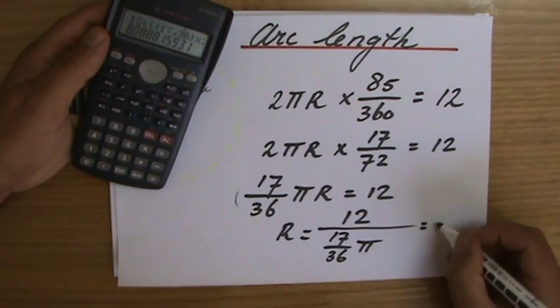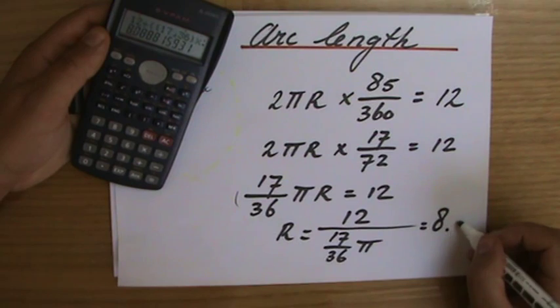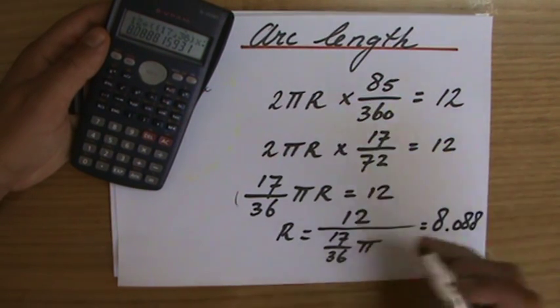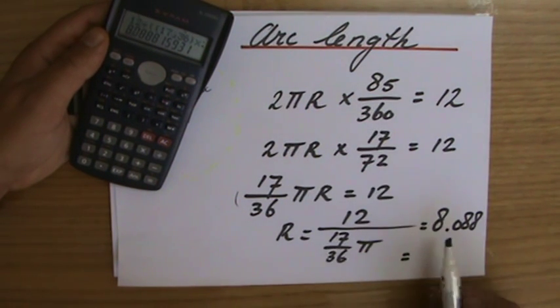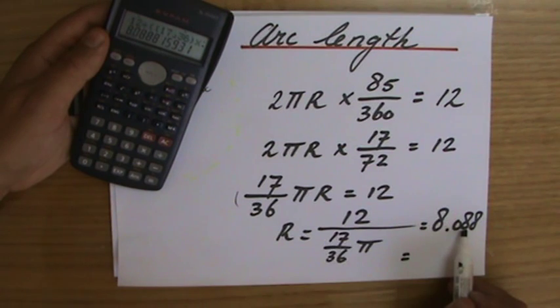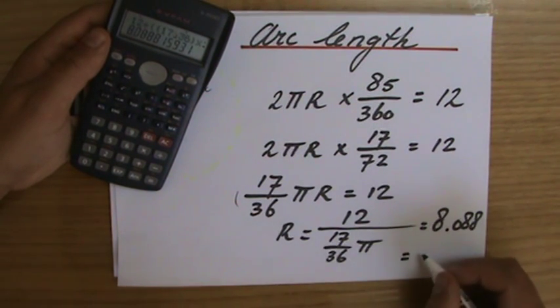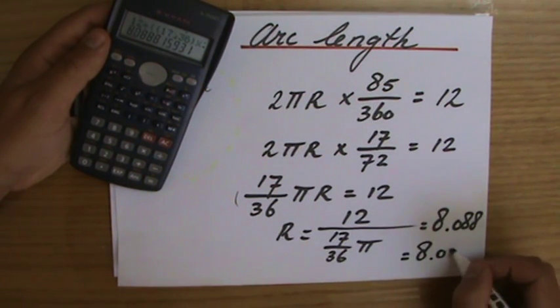And then my calculator tells me 8.088 and a couple of more decimals. But because it's a length, we have to round it to three significant figures. One, two, three. So the 8 stays an 8 or goes up to a 9. And it goes up to a 9.